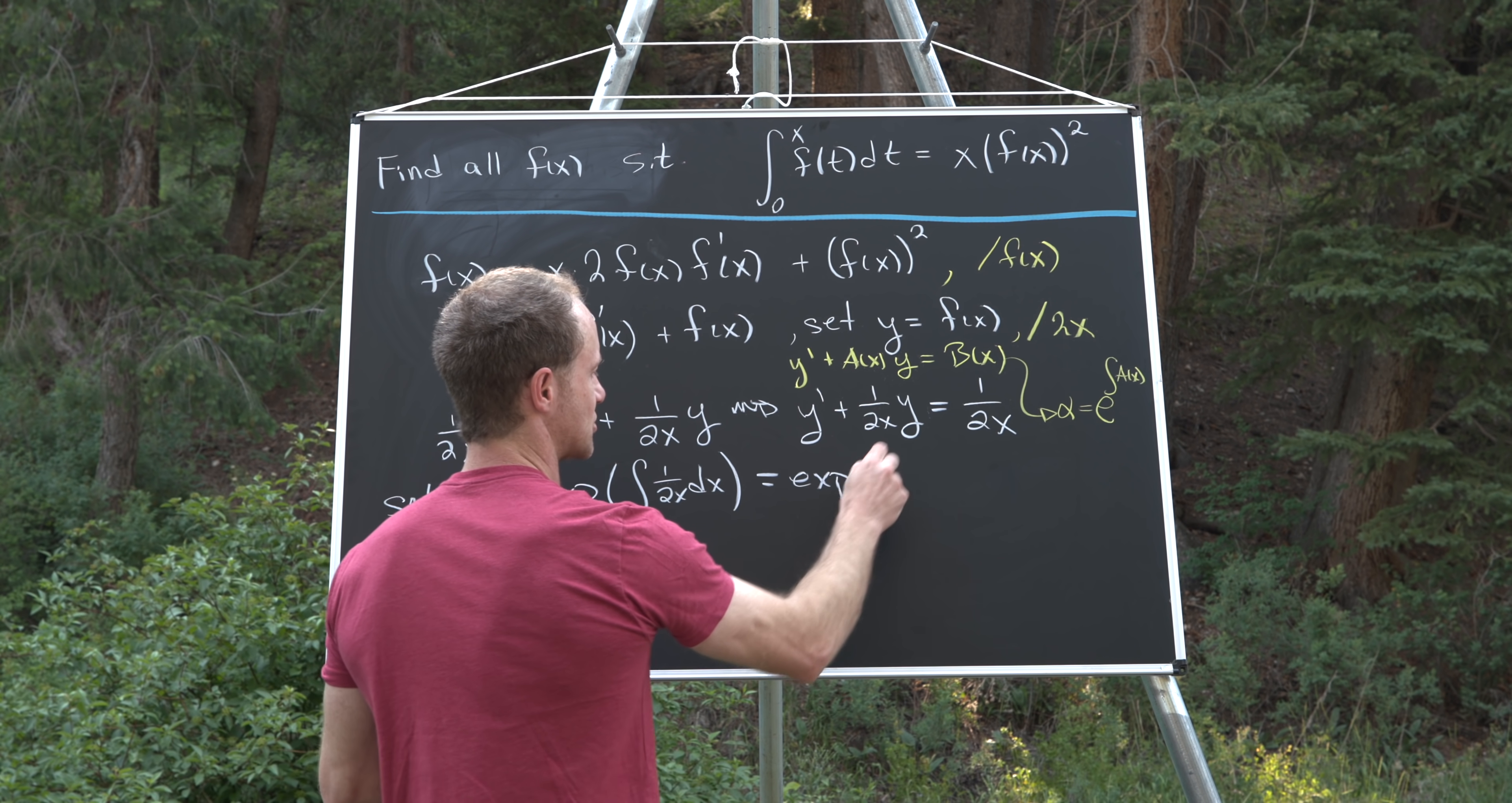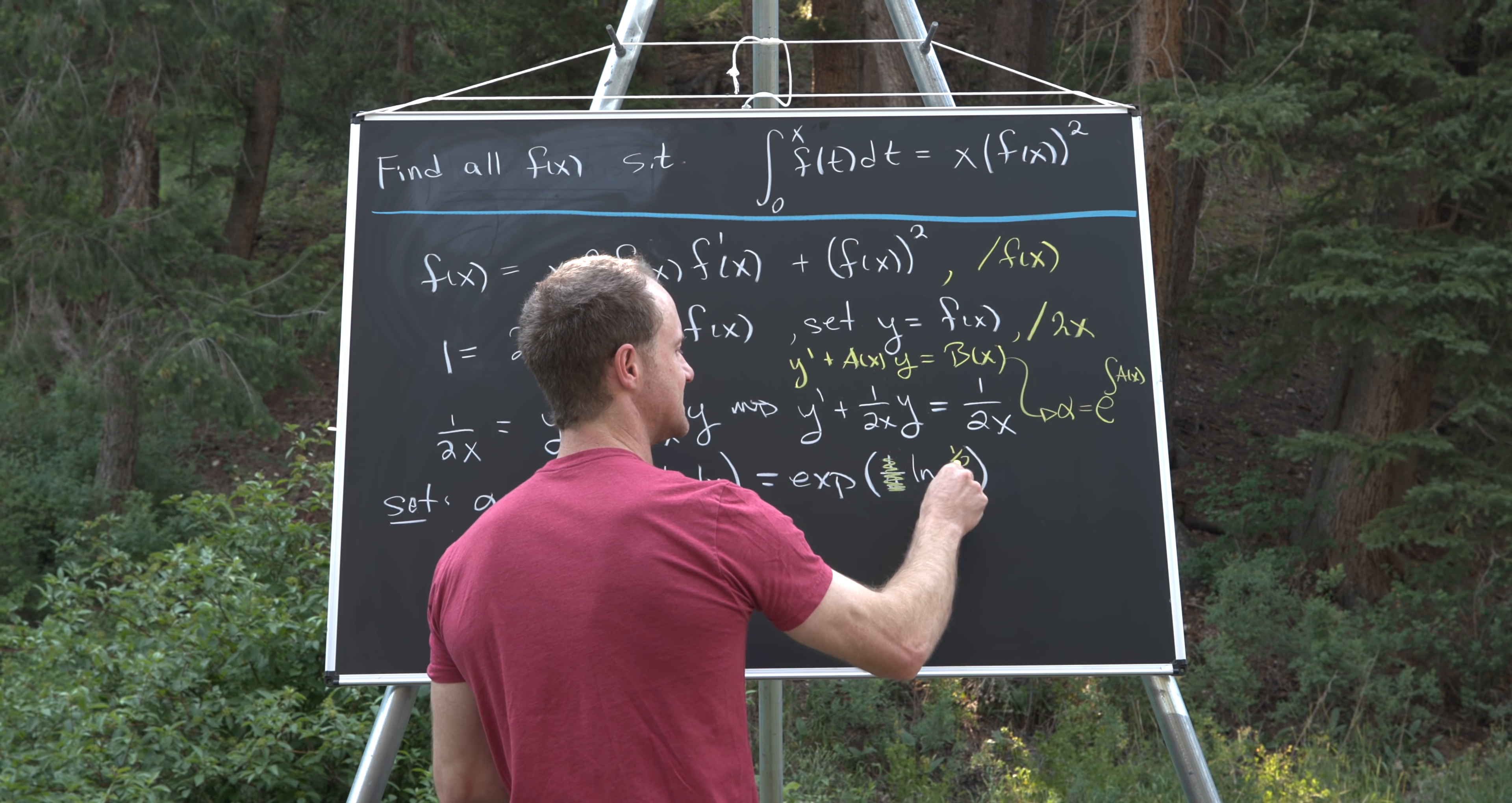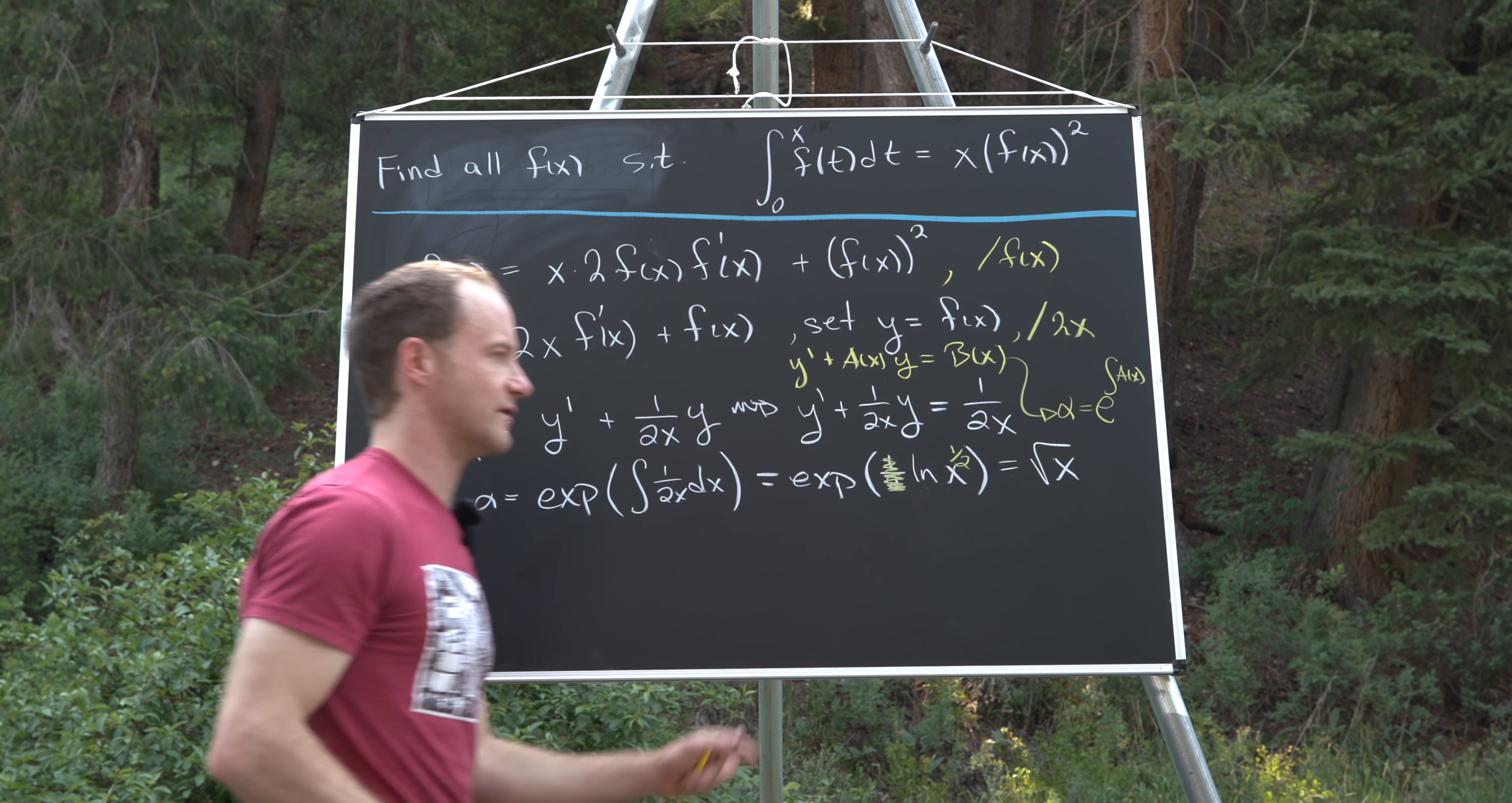But this is going to be the exponential of one half times the natural log of x. But let's see what we can do there. We can take this half and bring it inside the natural log using natural log rules. But now the exponential function and the logarithm function are inverses of each other. So that gives us x to the half or the square root of x.